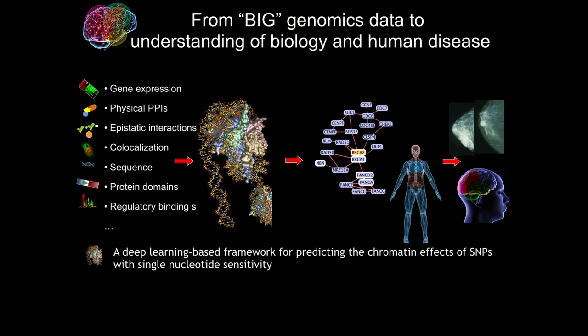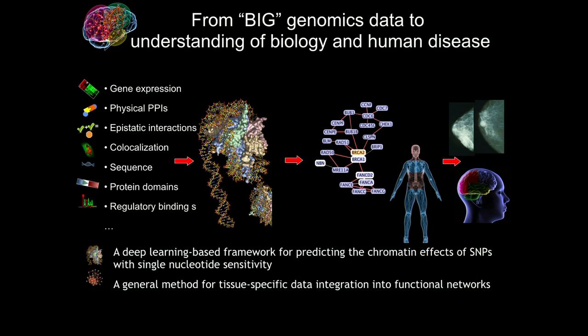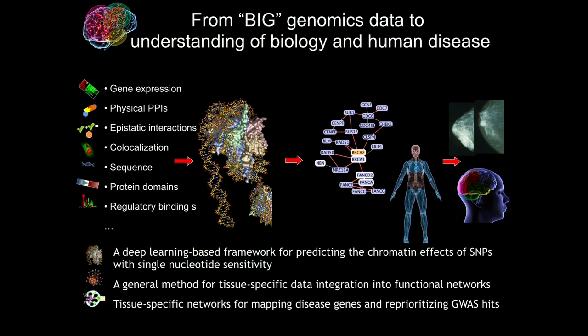To summarize, we'll talk about a deep learning-based framework for looking at single nucleotide changes and their effects on chromatin, and whether they will be disease-causal. I will talk about a general method for making tissue-specific networks from noisy and heterogeneous data. And finally, how we can use these networks combined with quantitative genetics data to improve our understanding of the molecular basis of human disease.